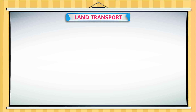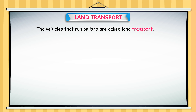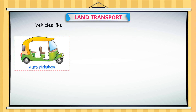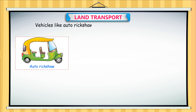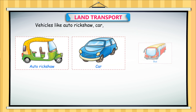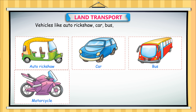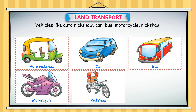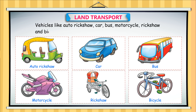Land Transport. The vehicles that run on land are called land transport. Vehicles like auto rickshaw, car, bus, motorcycle, rickshaw, and bicycle are means of land transport.